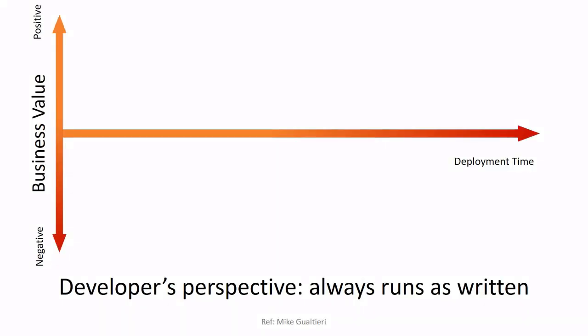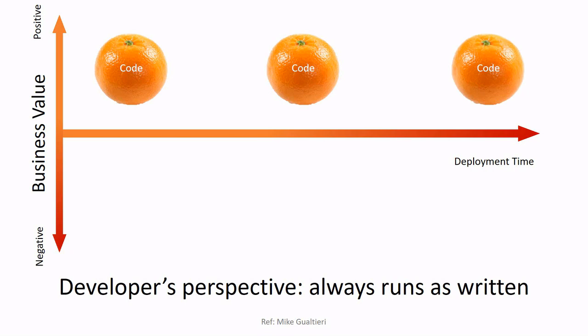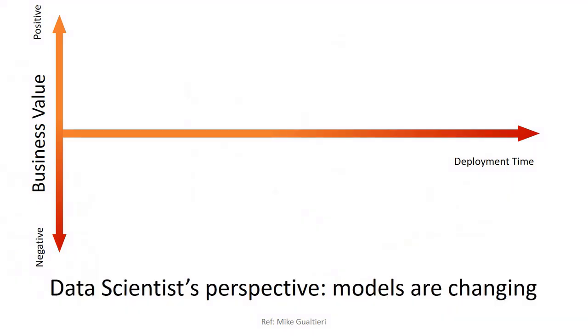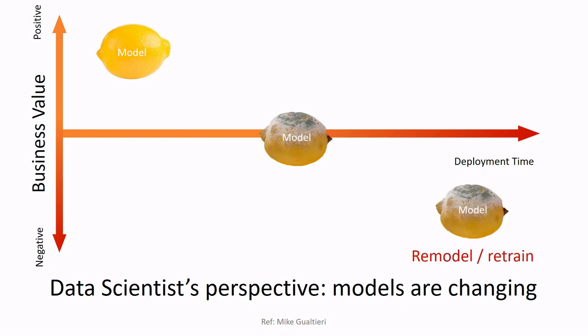As a developer, you have some logic and business rules. It runs as written, always. It's stable — we don't expect it to change on the production line. As a data scientist, you model some problem and see that it works for production data, then you deploy to the production line. But over time, it might decay. You might remodel it with a new structure or retrain it by feeding new instances.